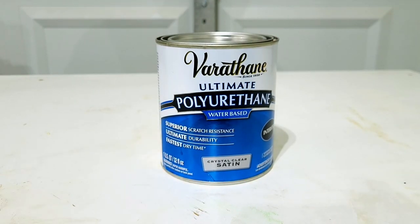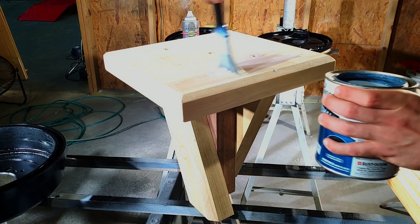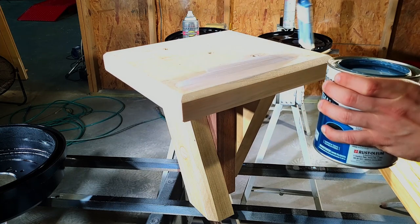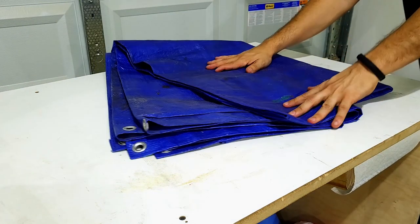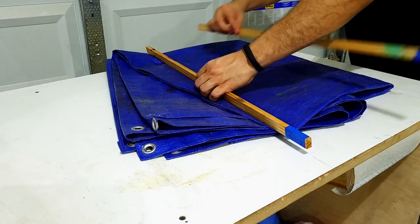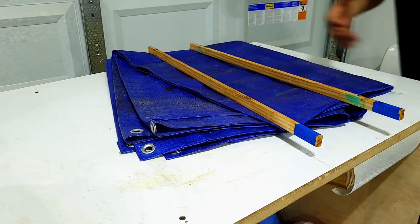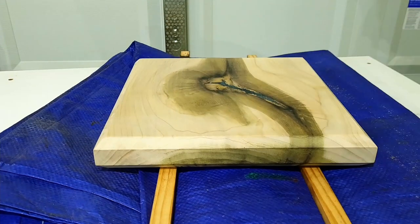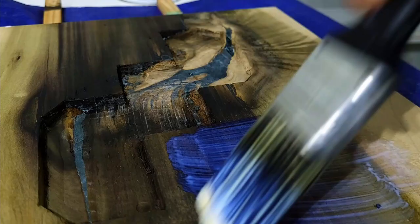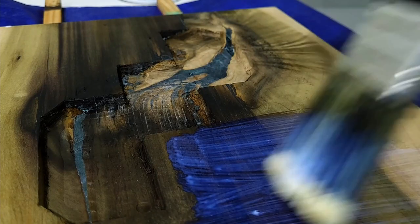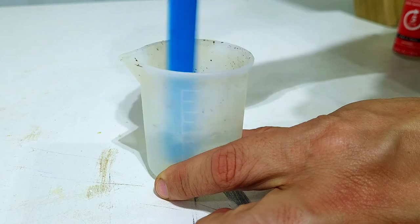I applied two coats of water-based satin polyurethane as my finish. Once the finish was dry, I used some five minute epoxy to attach the top to the rest of the nightstand.